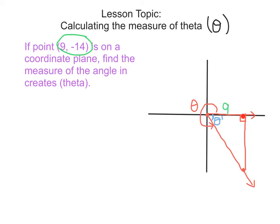From there we went down negative 14 to reach the point, so the length of that side is 14 — remember, length is not negative even though the coordinate is negative 14. Now we can use inverse trig to find the measure of this angle.